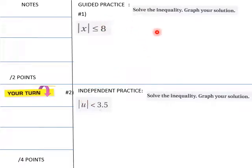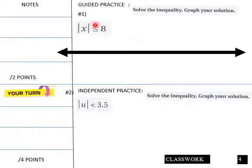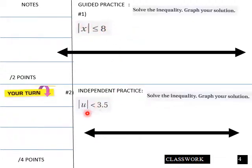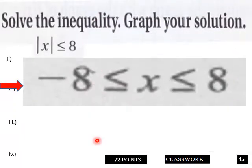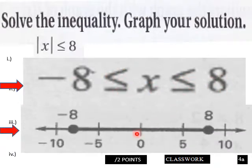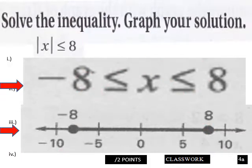Solve the inequality and graph your solution. |x| is less than or equal to 8. Students, this one is yours: |u| is less than 3.5 — graph your solution. For |x| ≤ 8, we get negative 8 less than or equal to x less than or equal to 8. The graph has negative 8 on the bottom end and positive 8 on the top end of this compound inequality.